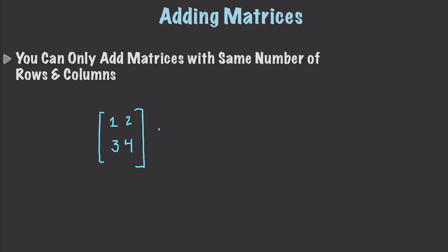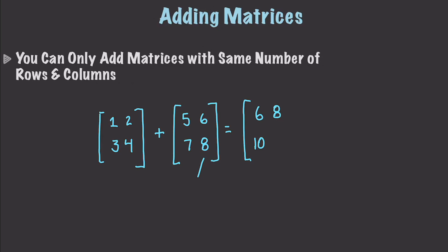And I had another matrix which would be 5, 6, 7, and 8. To find the sum of both of them, all I would do is add them together. So I would get 1 plus 5 which is 6, then 2 plus 6 which is 8, then 3 plus 7 which is 10, and then 4 plus 8 which is 12. Very easy to add matrices.